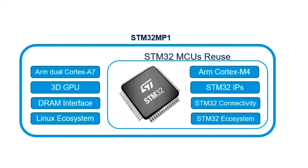The STM32 MP1 product line is something of a departure into new territory for STMicro, into the realms of microprocessor systems. Interestingly, they've built it around reusing the STM32 ecosystem that many of you will be familiar with. There's an ARM Cortex M4 in the device with the same peripherals and connectivity that you'd find in any of ST's microcontrollers.